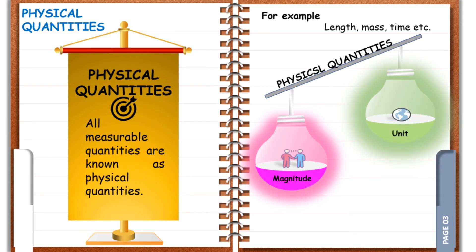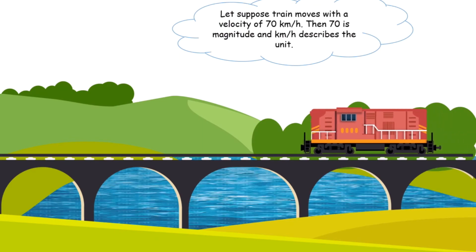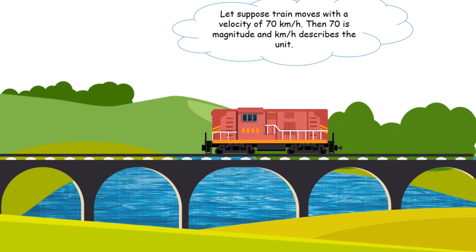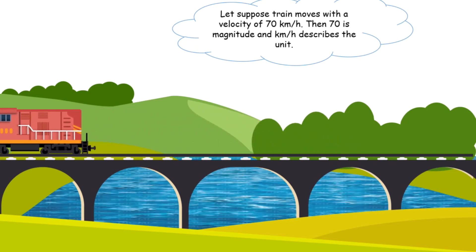Take an example of velocity which is also a physical quantity. Now consider a train moves with a velocity of 70 km per hour as shown below. Here 70 describes the magnitude of the velocity and km per hour describes its unit.